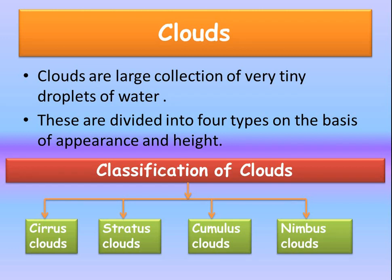The four types are cirrus clouds, stratus clouds, cumulus clouds and nimbus clouds. Now let us learn the spellings. Cirrus: C-I-R-R-U-S. Stratus: S-T-R-A-T-U-S.